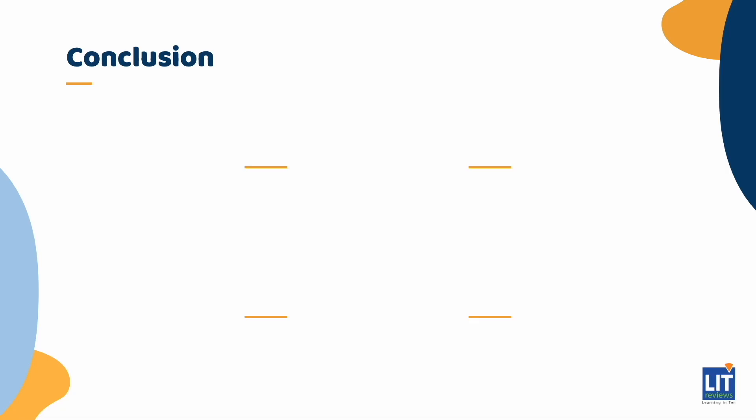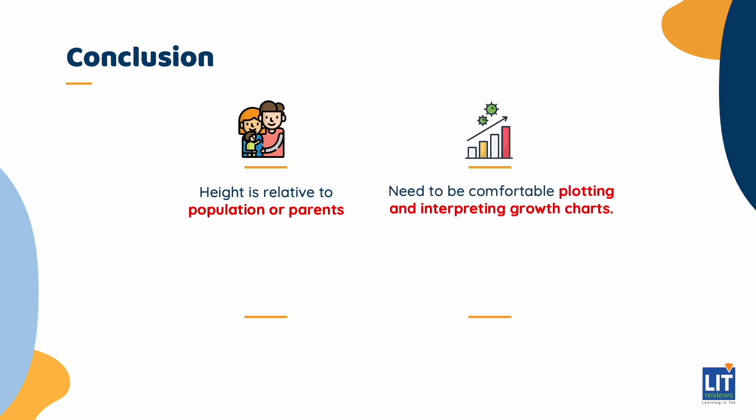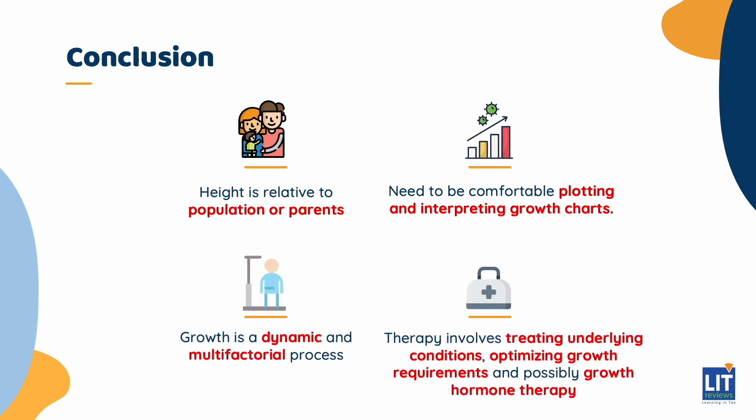In conclusion, whenever evaluating a child for short stature, it is important to keep these in mind: Height is relative to the population and to the child's parents. Plotting and interpreting growth charts accurately is vital. Growth is a dynamic and multifactorial process. Therapy for short stature involves treating any underlying conditions, optimizing growth requirements, and possibly growth hormone therapy.